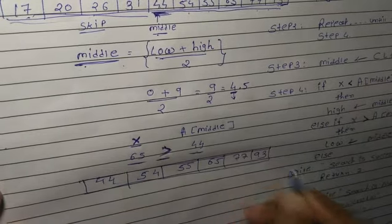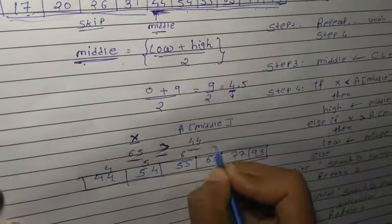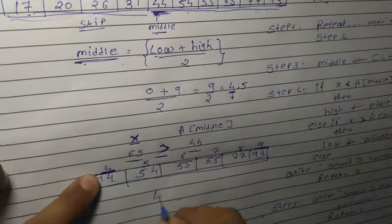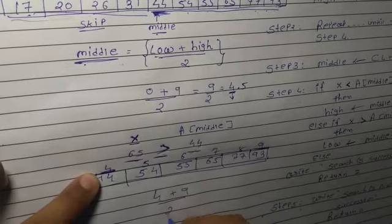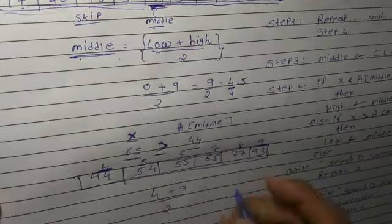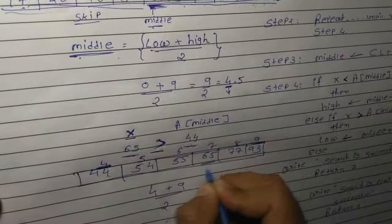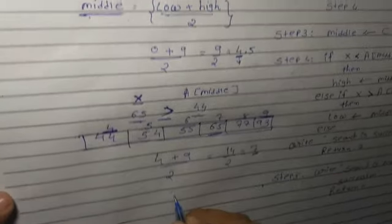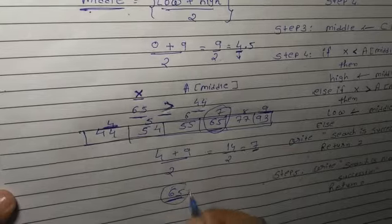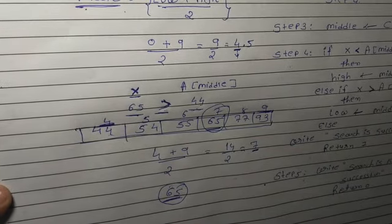Now again we write the positions: 4, 5, 6, 7, 8, and 9. Now we search for the middle again: (4 + 9) / 2 = 14 / 2 = 7. So at position number 7, the middle portion gives us 65. The data we were looking for is found here, so no further process is needed.